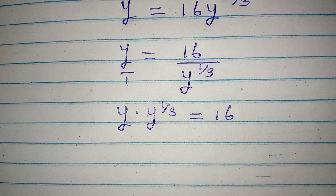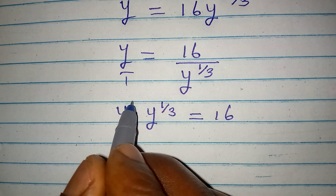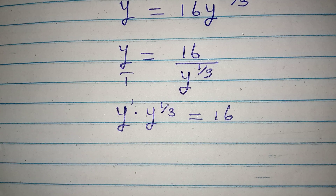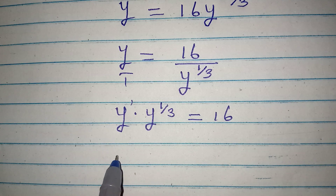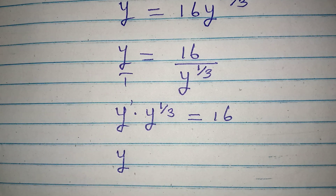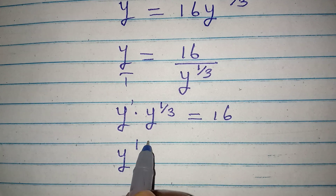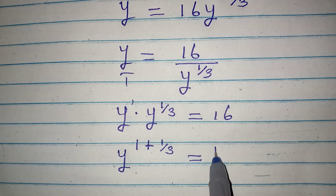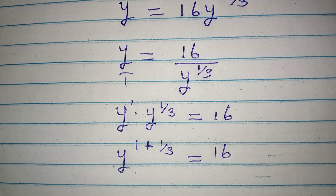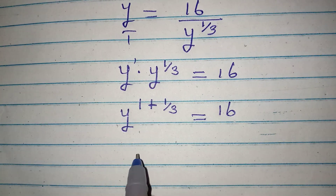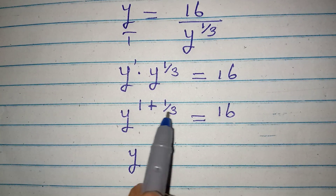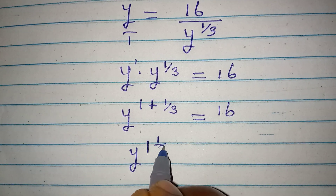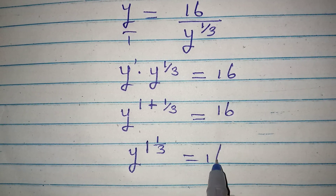Now this is very simple. Because from here, we believe that y here is having a power of 1. And if that is the case, then we are going to have y to the power of 1, because they are the same base — pick one of them. Then we add the powers: 1 plus 1 over 3, and this is going to be equal to 16. Putting these two together, we are going to have 1 whole number and 1 over 3 as the power, and this is equal to 16.